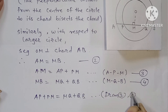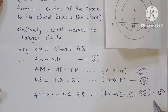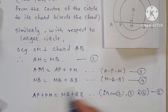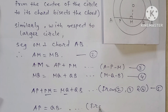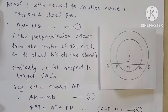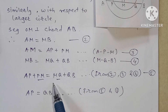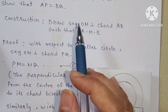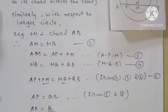From equations 1 and 5: since PM = MQ, these terms cancel from both sides. What remains is AP = QB. Since BQ and QB are the same, we have shown that AP = BQ, which is what the question asked us to prove.